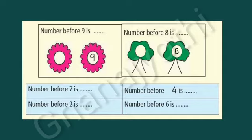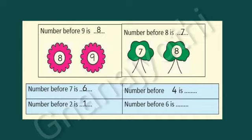Look at this picture, students, and answer. Number before 9 is dash. The number before 9 is 8. Next, the number before 8 is 7. The number before 7 is 6. The number before 2 is 1. The number before 4 is 3. And the number before 6 is 5.